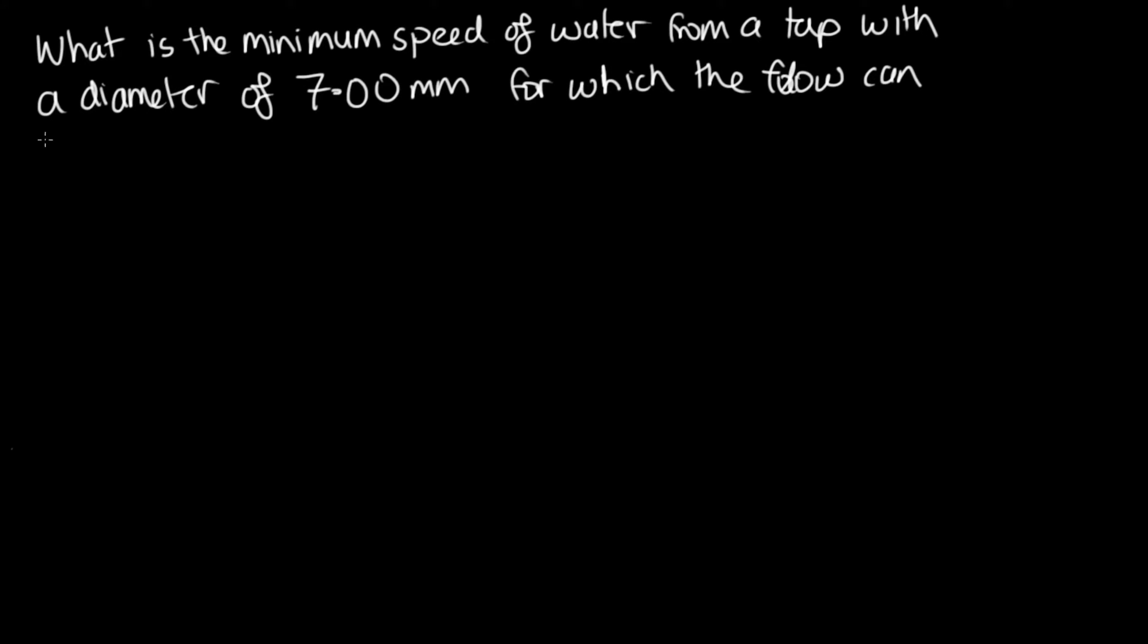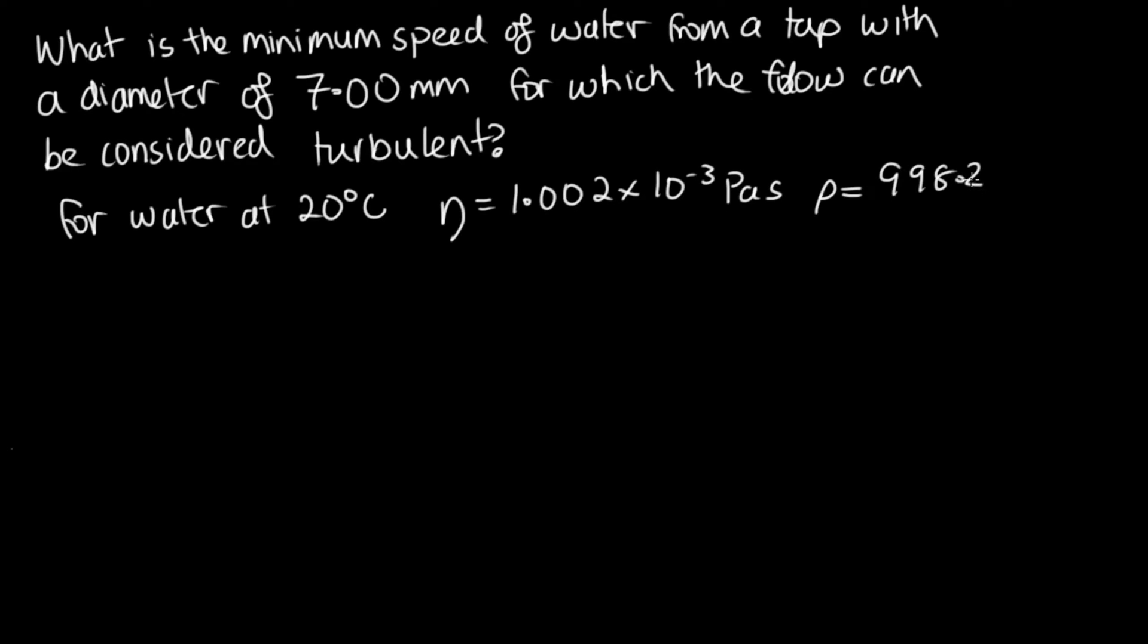The question: what is the minimum speed of water from a tap with a diameter of 7.00 millimeters, for which the flow can be considered turbulent? We're told that for water at 20 degrees C, the viscosity is 1.002 × 10^-3 pascal seconds, and the density is 998.2 kilograms per meters cubed.